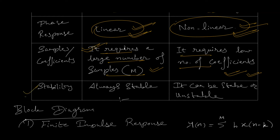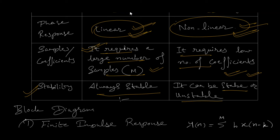Coming to the stability part: FIR filters are always stable as they do not have any feedback path. But IIR filters can be stable or they can be unstable — that totally depends on the feedback type.